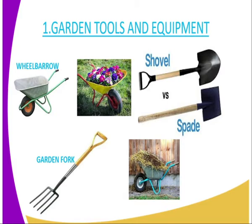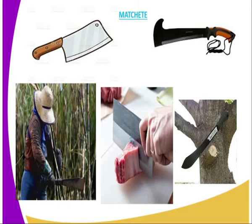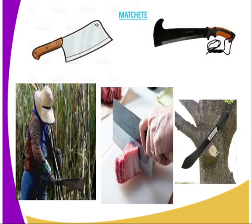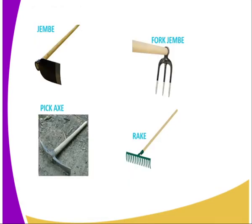The garden fork is used to lift manure and pack it into a wheelbarrow. Then we have a machete. A machete is heavy compared to a panga. It is used for harvesting sugarcane — as you can see, there is a man using a machete to cut sugarcane. A machete is also used by a butcher to cut meat and crush bones, and it can be used for pruning, cutting the stem of roots because it is strong and heavy.